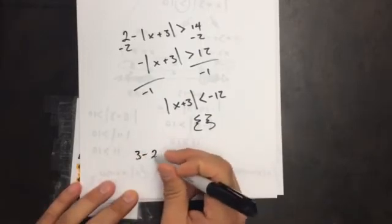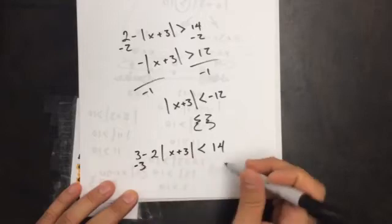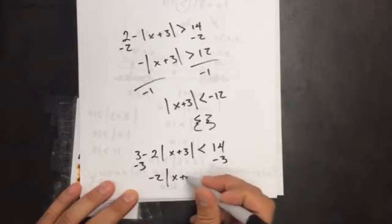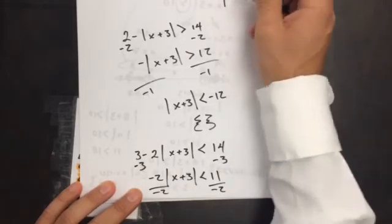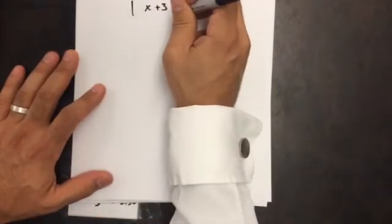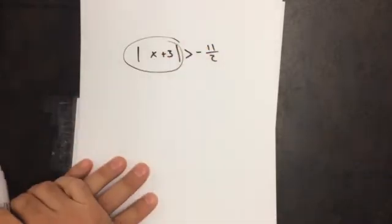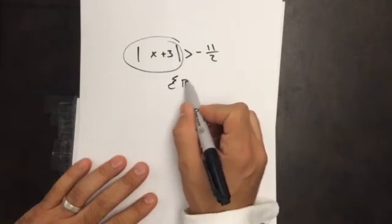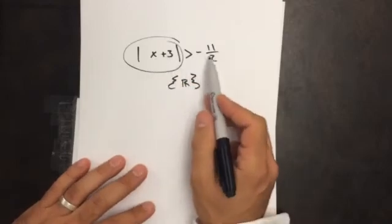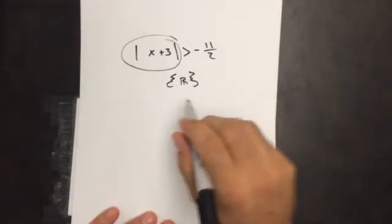A very similar problem: three minus two times the absolute value of x plus three is less than 14. Subtract three to get negative two absolute value of x plus three is less than 11. Divide by negative two — flip the sign — giving the absolute value of x plus three is greater than negative 11 over two. Since any positive distance is always greater than a negative number, this is all real numbers.